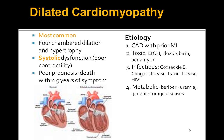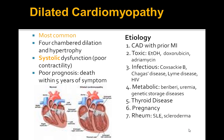Metabolic causes include beriberi, uremia, genetic storage diseases, and thyroid diseases. Pregnancy, systemic lupus, and scleroderma are also risk factors for dilated cardiomyopathy. However, most cases are idiopathic.